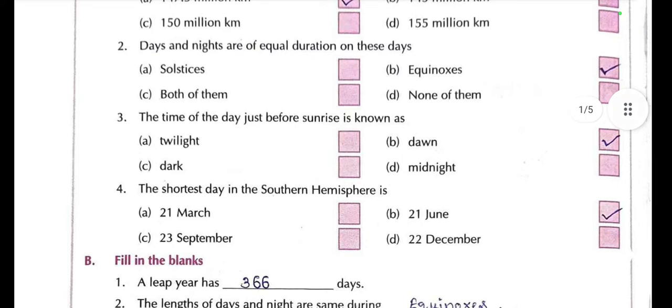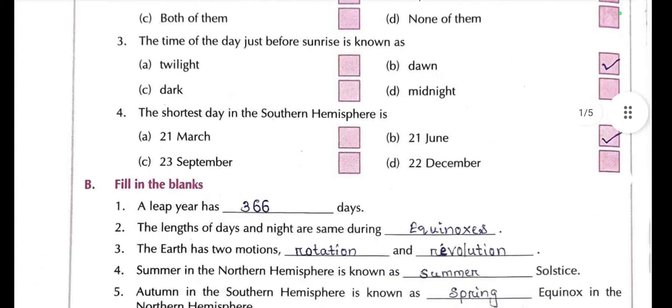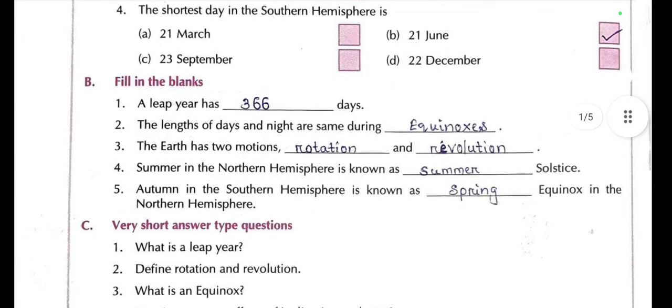The time of the day just before sunrise is known as dawn. Question 4: The shortest day in the southern hemisphere is 21 June. Next: a leap year has 366 days.